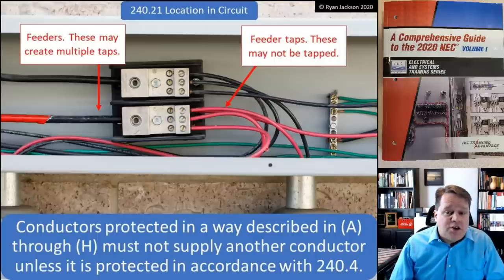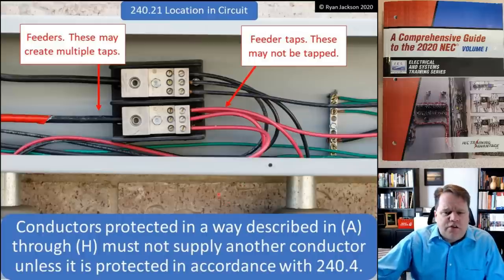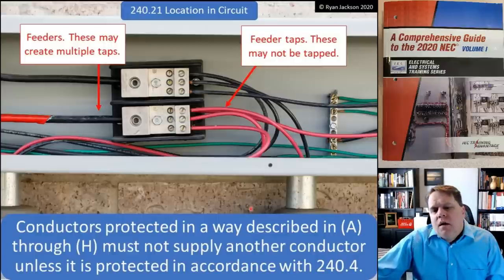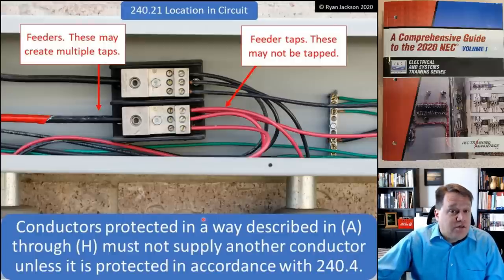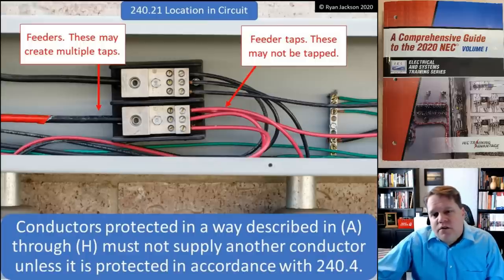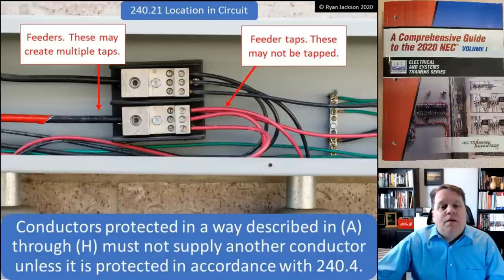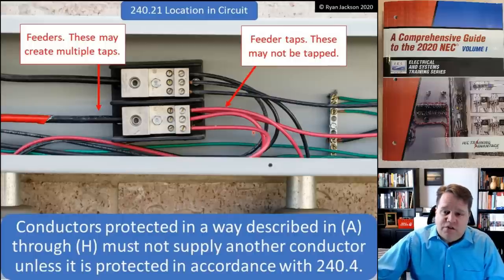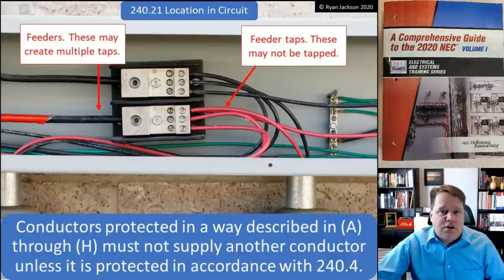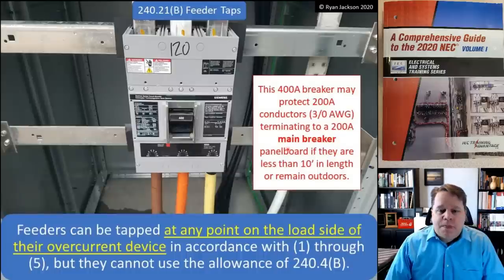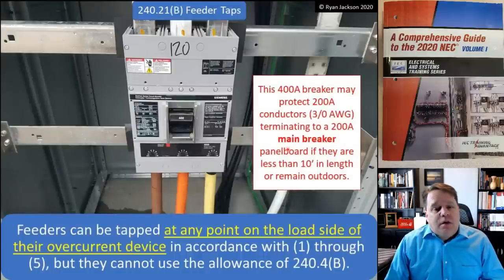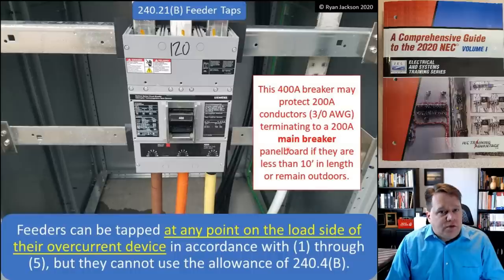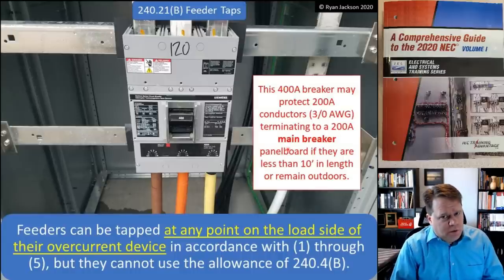The key rule is: you can tap the feeder as many times as you'd like, but you're not allowed to tap the tap conductor. For example, I couldn't tie onto an 8-gauge tap wire and run 14-gauge wire to a 15-amp fuse disconnect — that would be a violation because the tap cannot supply another conductor that isn't protected per the general requirements. A feeder can be tapped at any point on the load side of the overcurrent device.